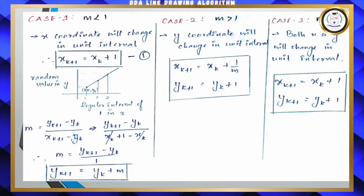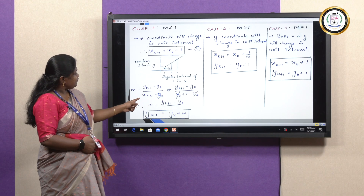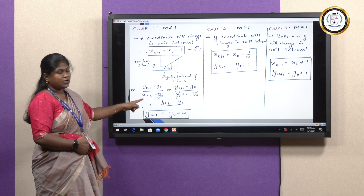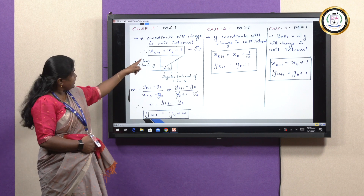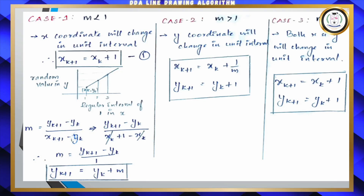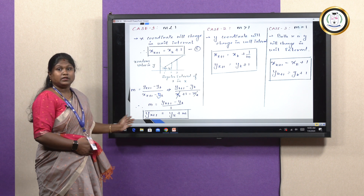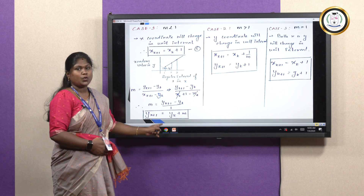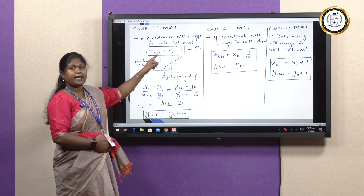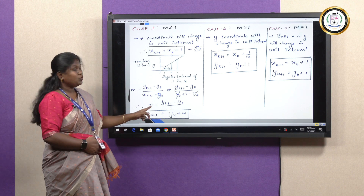Using the slope formula with our substituted values, in the place of XK+1 we substitute XK + 1. The XK and −XK cancel out, giving us M = YK+1 − YK. Therefore the next Y value is YK+1 = YK + M. Altogether, the formula for Case 1 is: XK+1 = XK + 1 and YK+1 = YK + M.